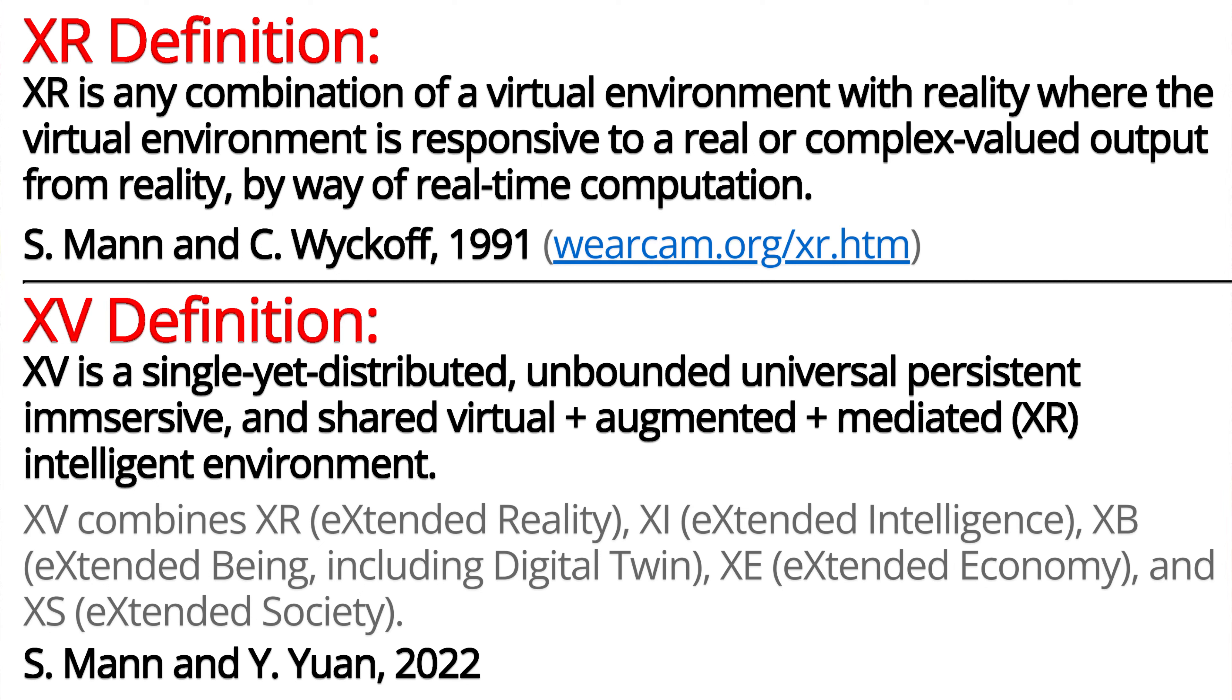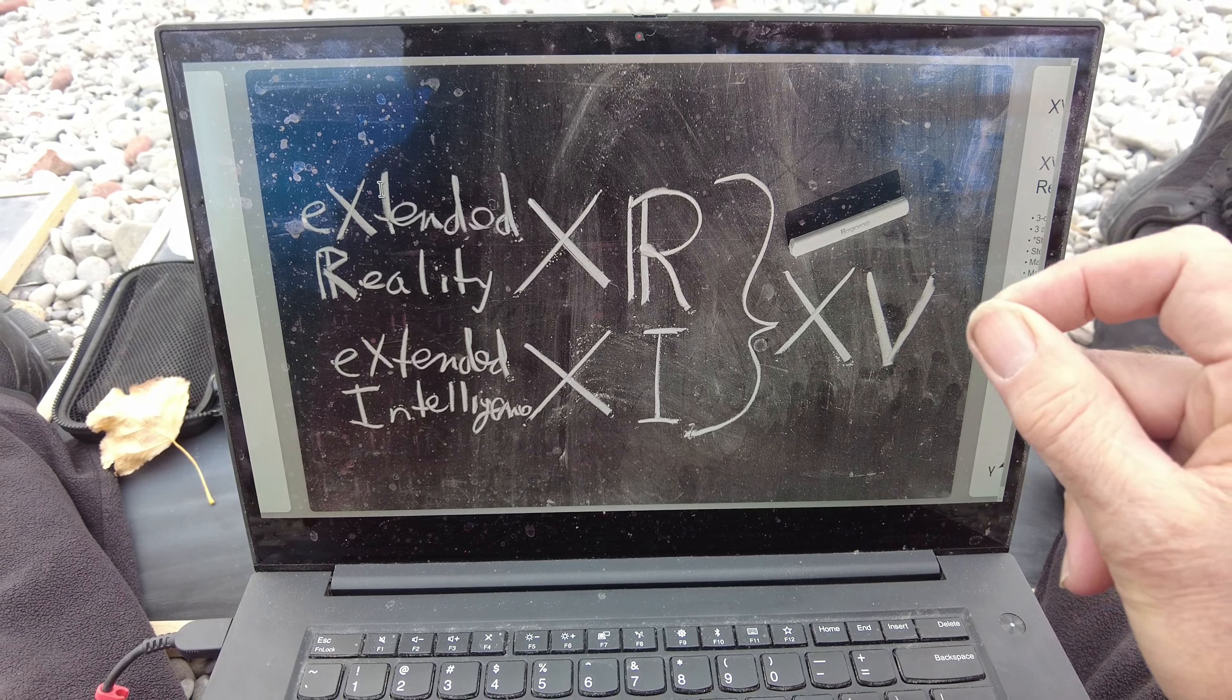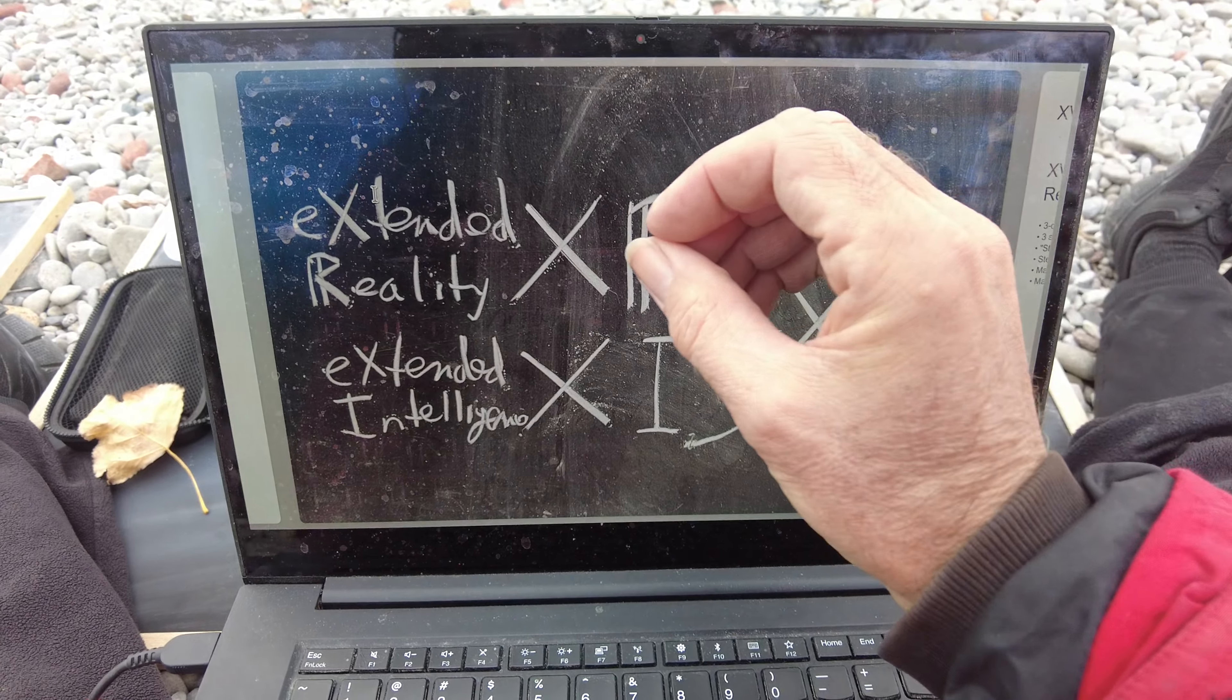XV definition. XV is a single, unbounded, universal, persistent, immersive, shared XR universe.